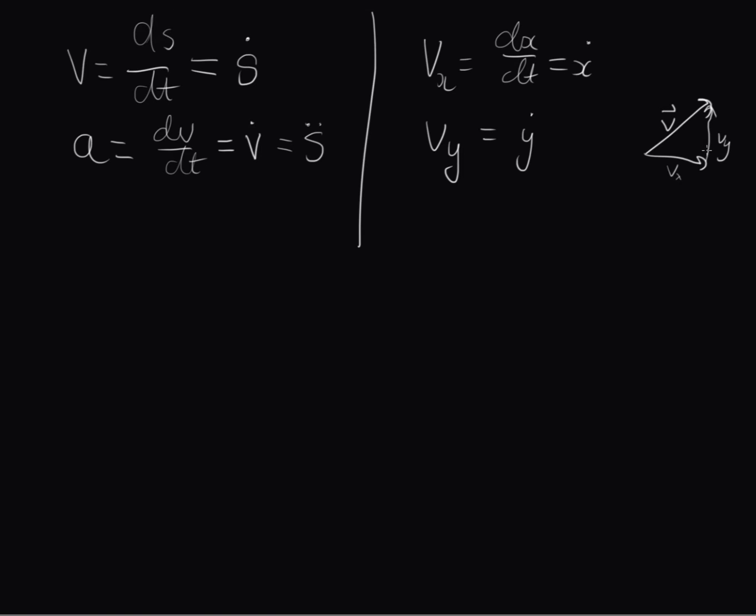And just from Pythagoras we know that to find the magnitude of this vector it's just the square root of vx squared plus vy squared. In other words we can write v is equal to the square root of x dot squared plus y dot squared. So why am I showing you this?